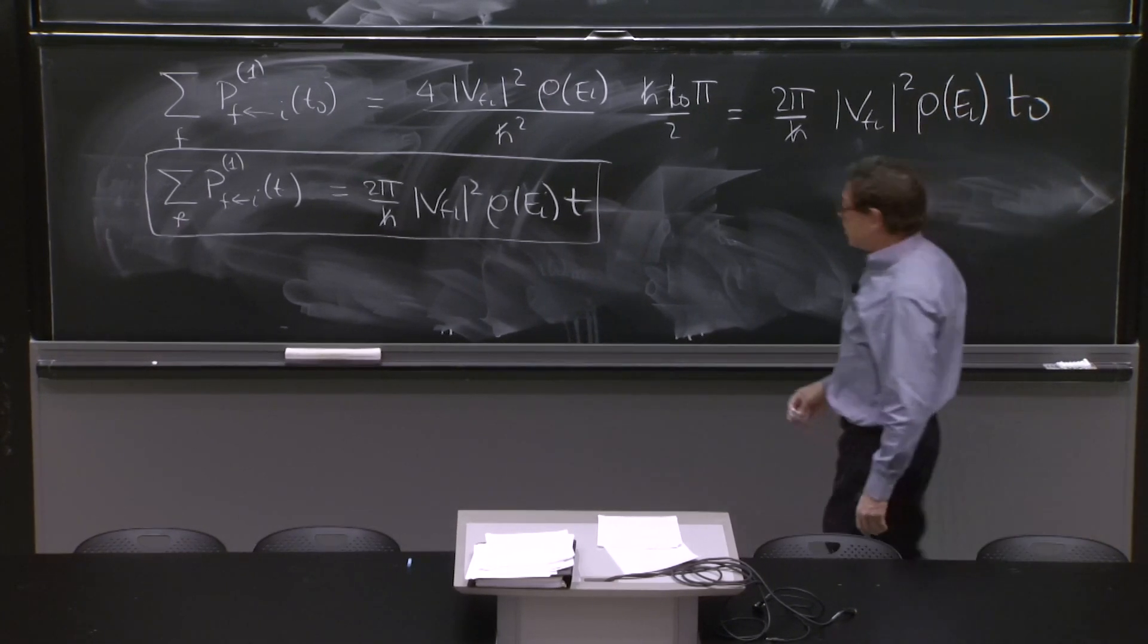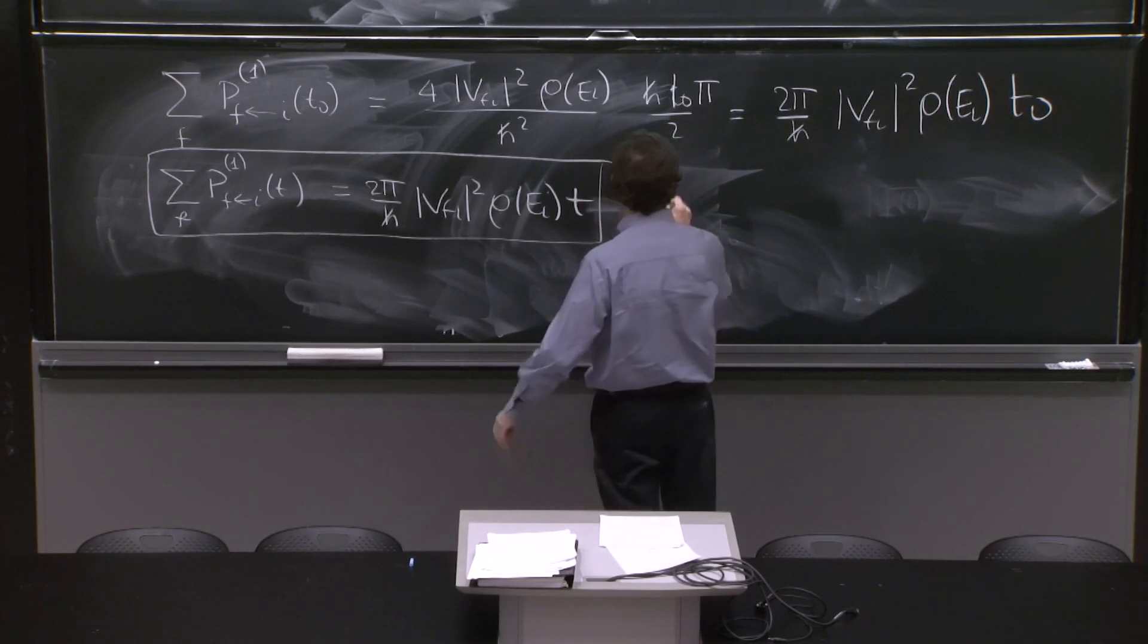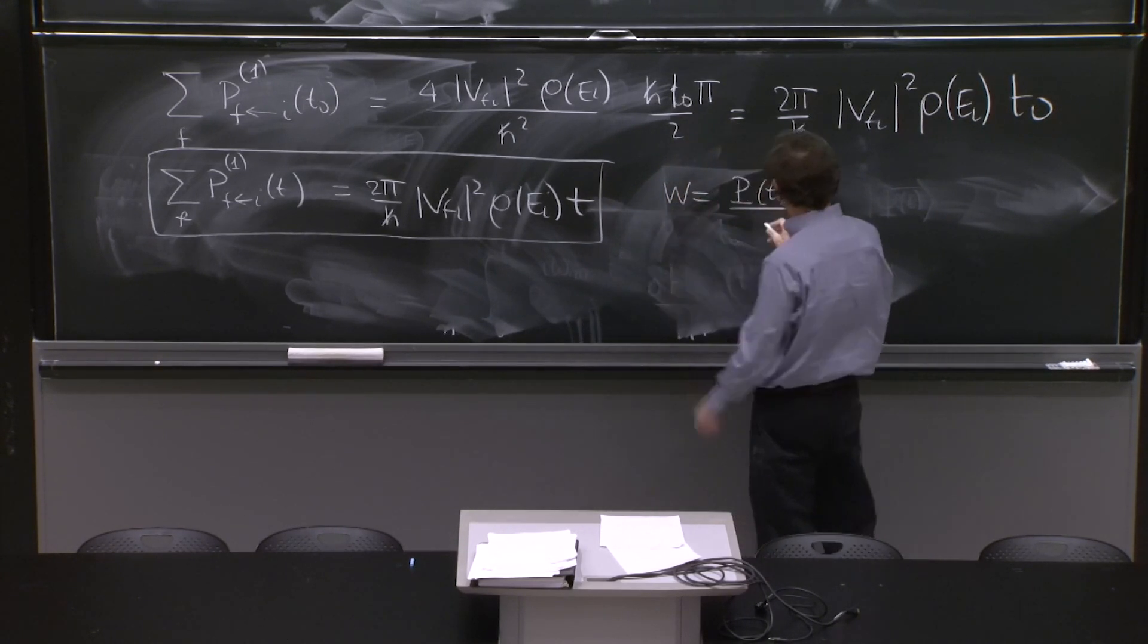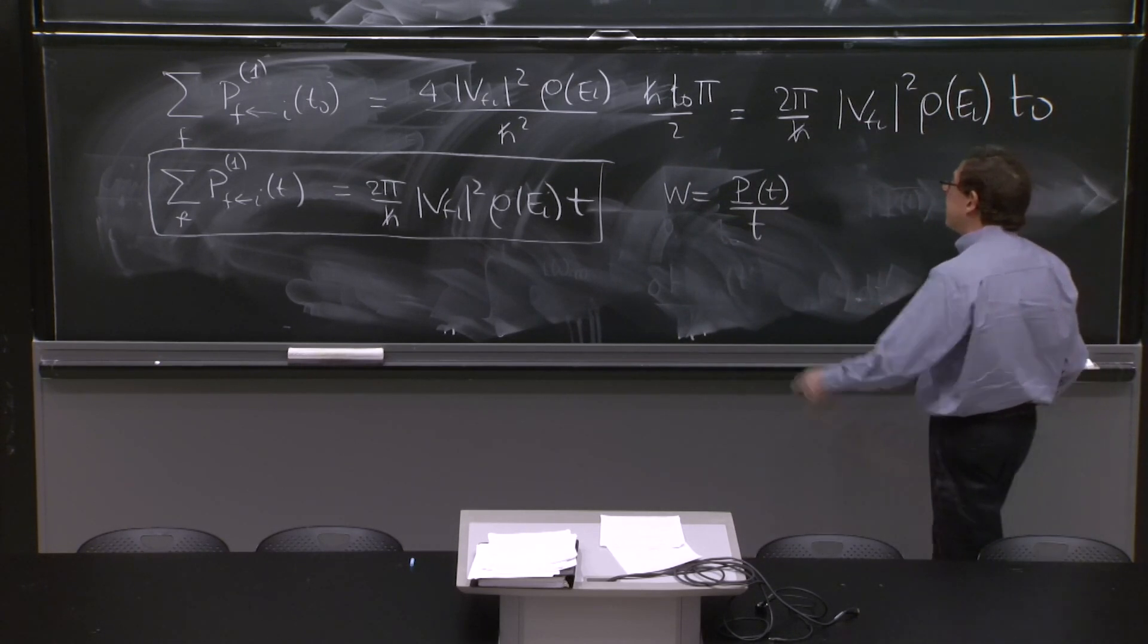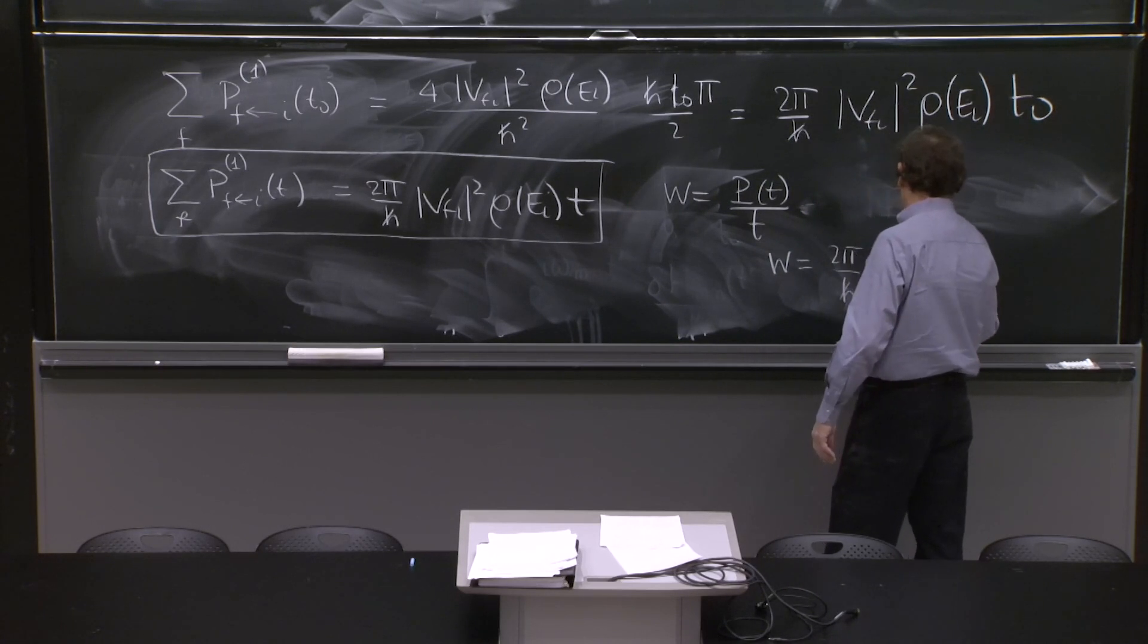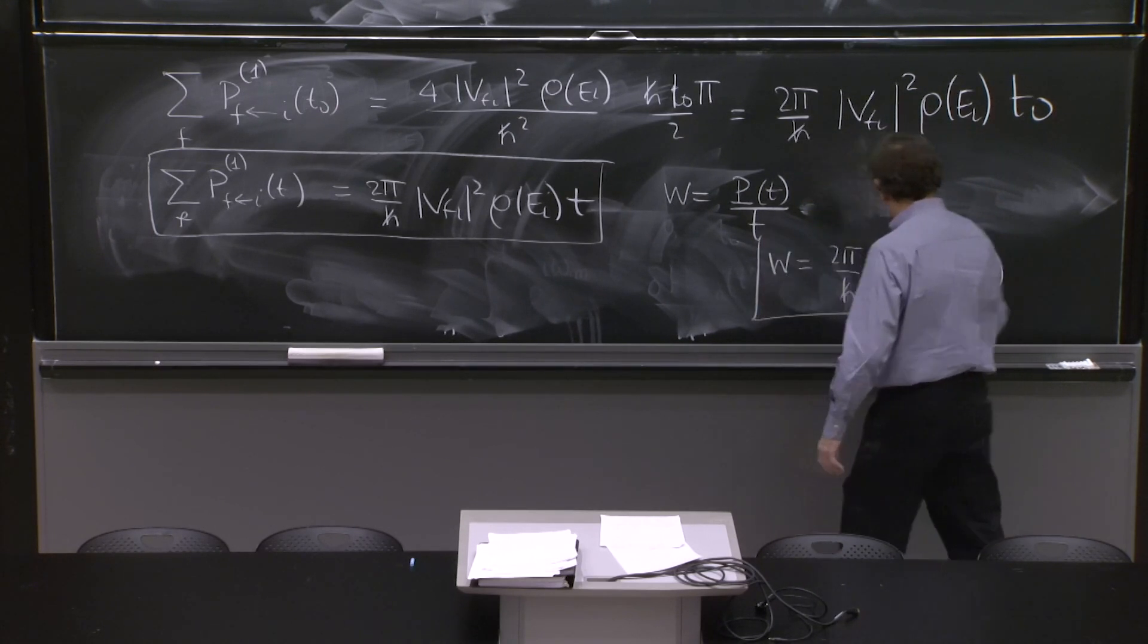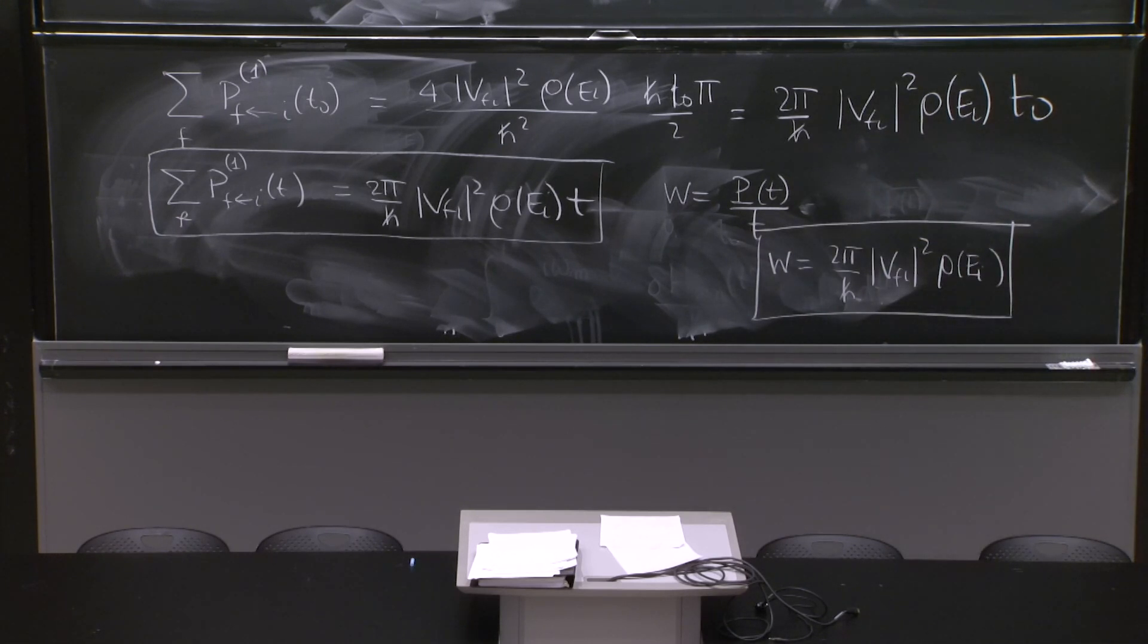From here, we have a transition rate. So a transition rate is probability of transition per unit time. So a transition rate would be defined as the probability of transition after a time t divided by the time t that has elapsed. And happily, this has worked out so that our transition rate w is 2 pi over h bar vfi squared rho of ei, and this is Fermi's golden rule, a formula for the transition rate to the continuum of final states.